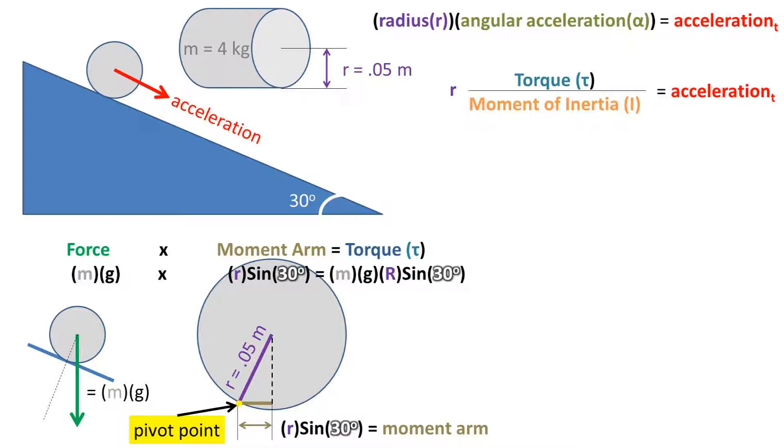Multiplying the force times the moment arm, we get a torque of mass times gravity times the radius times the sine of 30 degrees.